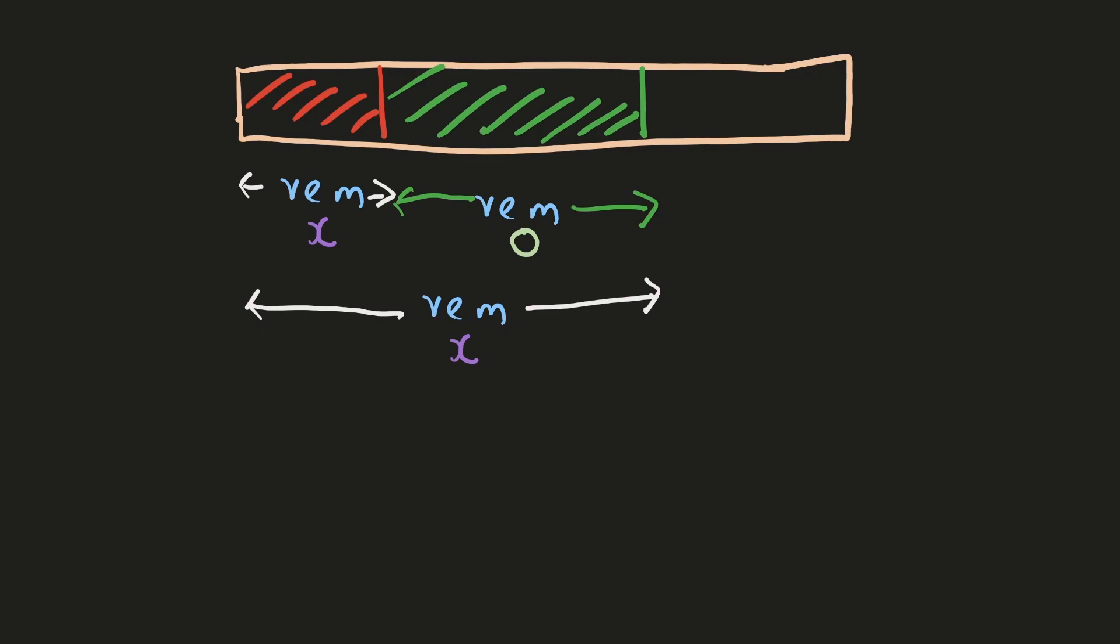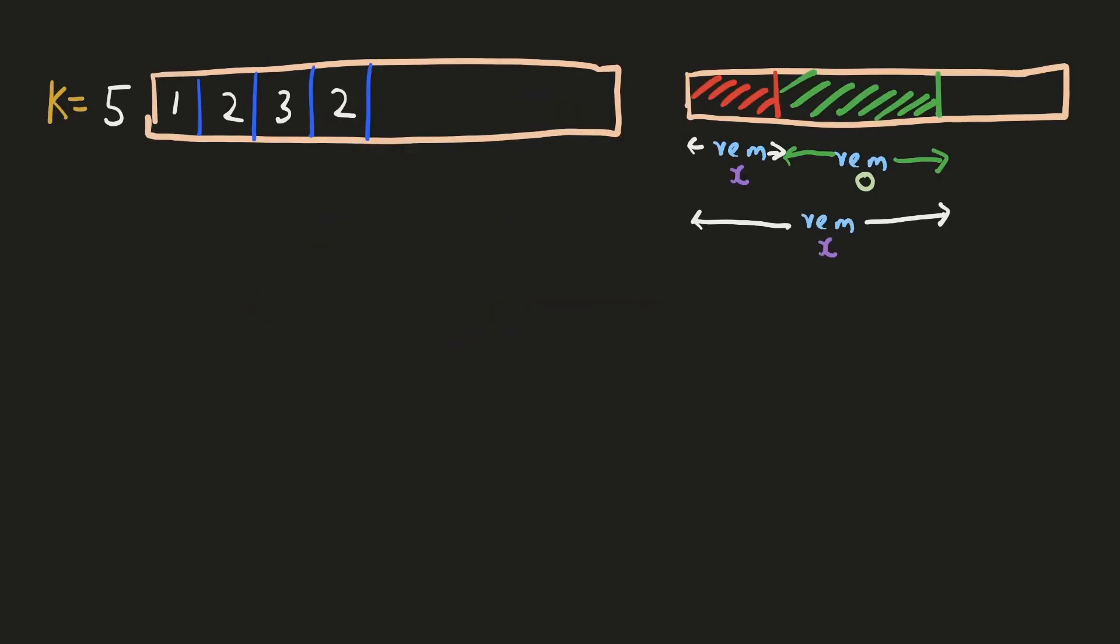Let's understand this with the help of an example. For example, when we start noting down the remainders of the prefix sum when divided by k, we see that we have already encountered this remainder one before. So the subarray of 2 and 3 must be divisible by 5. We could also prove this by finding the difference between these two parts. For example, we could represent the prefix sums like this, and when we take the difference of these two, we see that the result is a multiple of 5. So it means that this subarray has to be a multiple of 5.